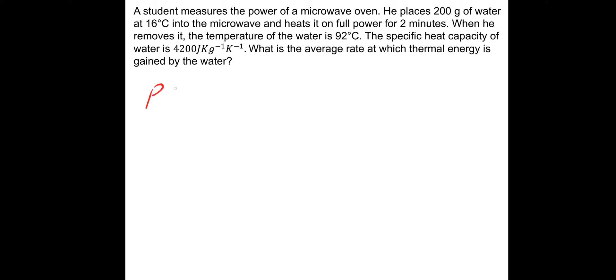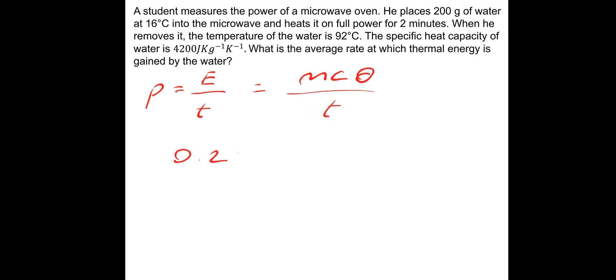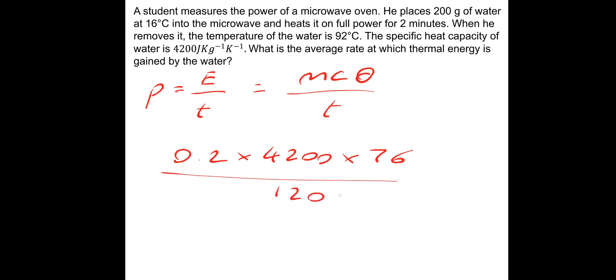The average rate at which thermal energy is gained is the power, and power is energy over time — the rate of transfer of energy. In this case the energy is given by mcΔθ divided by time. So the mass 200 grams is 0.2 kg, multiplied by 4200, multiplied by the change in temperature: 92 minus 16 which is 76, divided by the time taken — two minutes is 120 seconds. That gives a power of 532 watts.